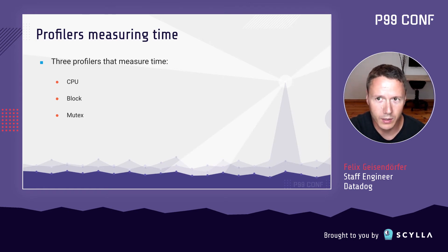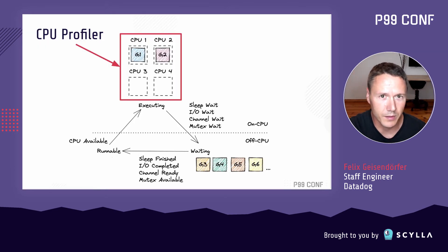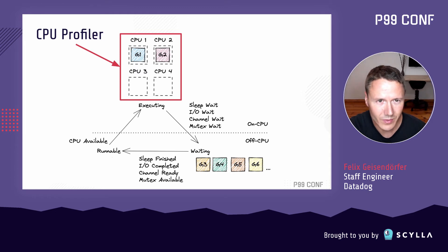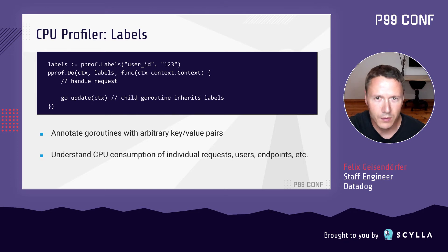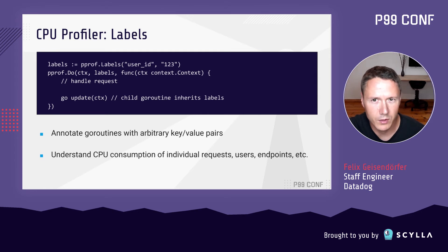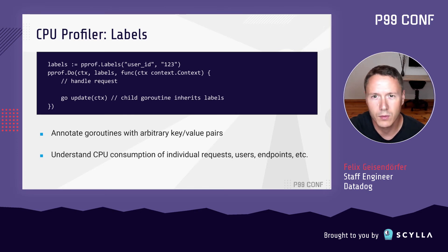Go has three profilers that measure how goroutines spend their time: the CPU, block, and mutex profilers. Goroutines can be in one of three states: executing, waiting, or runnable. The CPU profiler breaks down time goroutines spend executing on the CPU by stack trace, identifying code paths that could benefit from optimization. Go also provides profiler labels that allow you to annotate goroutines with arbitrary key-value pairs — inherited when a goroutine spawns another — letting you attach request IDs, user IDs, or endpoint names to understand per-request CPU consumption.